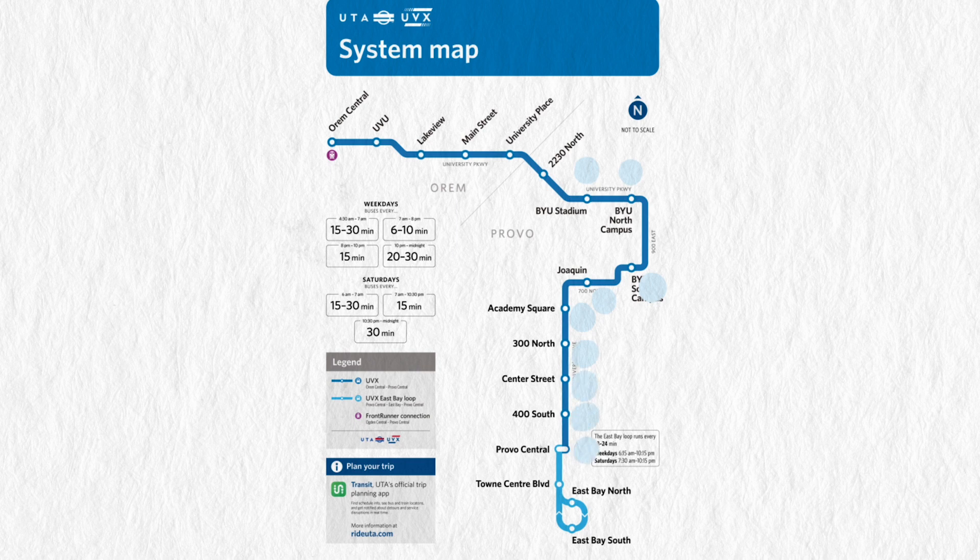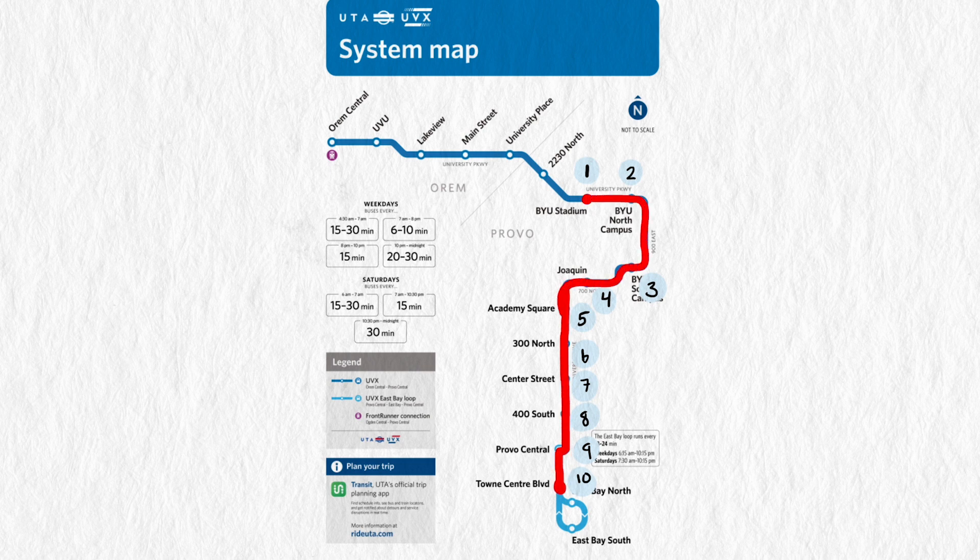If we look at the UVX map we'll notice that there's a stretch going south from BYU to the south part of town. It is also about a 4.5 mile trip from the BYU South Campus stop to the last stop on the bus line. And there are 10 stops on that stretch. So why the difference?